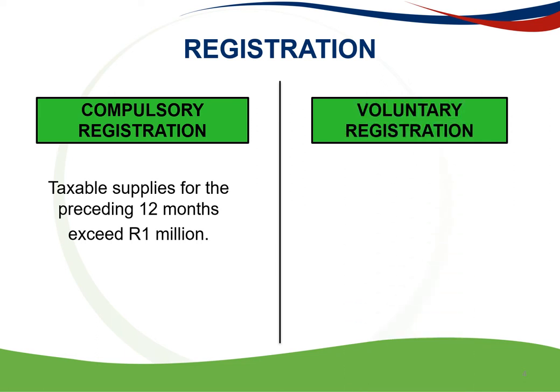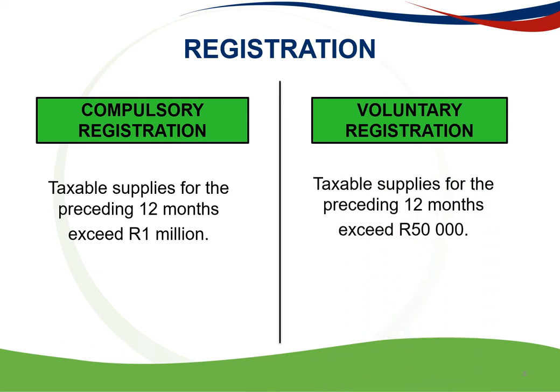The second registration option is voluntary registration. A person may register voluntarily if that person is conducting an enterprise and the value of the taxable supplies of all his enterprises is more than R50,000 during a previous 12-month period, or if the total value of taxable supplies has not exceeded R50,000 but can reasonably be expected to exceed that amount within 12 months from the date of registration, or if that person is continuously and regularly carrying on an activity listed in a regulation made by the minister — where the nature of these activities is such that taxable supplies are likely to be made only after a period of time.